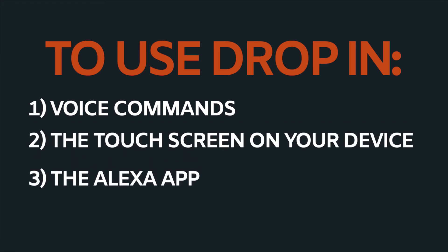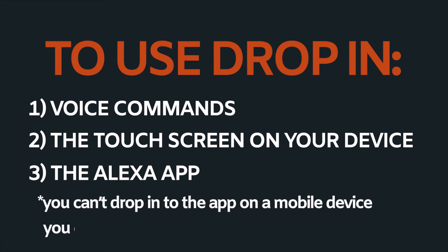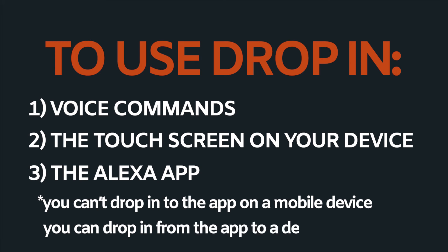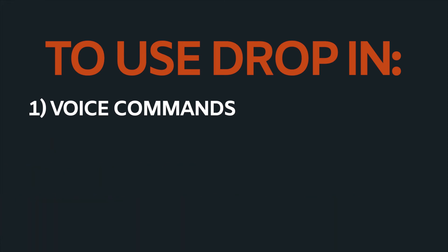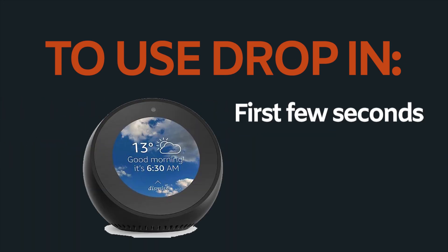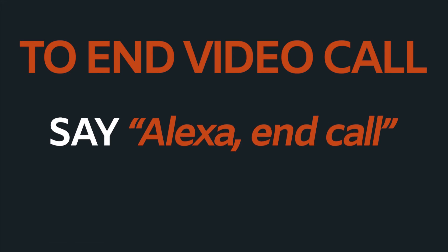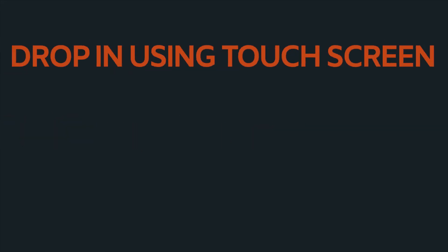To use drop-in, you can either use voice commands, use the touch screen on your device, or use the Alexa app. It is worth remembering that you can't drop in to the app on a mobile device, but you can drop in from the app to a device in the home. For example, using your voice you would say 'Alexa, drop in on Mum.' The first few seconds of a video call will be blurry, to give the other person a chance to move out of the way or hang up. Once you're done, say 'Alexa, end call' to hang up.